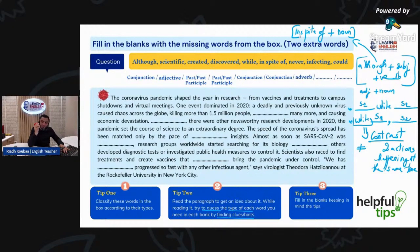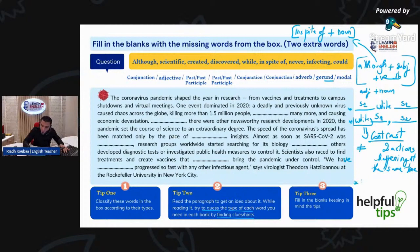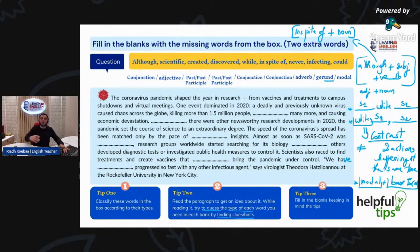Then we have 'never.' And then we have 'infecting,' which is a gerund. And then we have 'could,' which is a modal. We know that with modals, the structure is: modal + base form — meaning verb without 'to.' A modal can be like can, could, should, must, and so on. So I have to keep in mind that if I am going to use 'could,' I must find a verb that is in the base form.